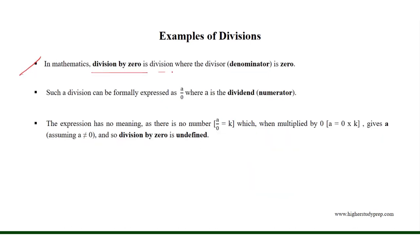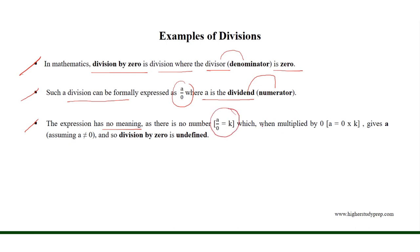Division by 0 is division where the divisor or the denominator is 0. Such a division can be formally expressed as a over 0, where a is the dividend or numerator. The expression has no meaning, as there is no number k equal to a over 0 which, when multiplied by 0, gives a number a where a is not equal to 0. And so, division by 0 is undefined.